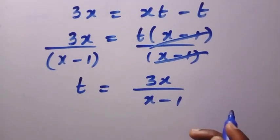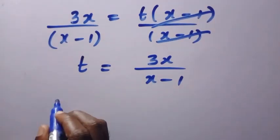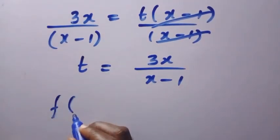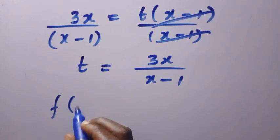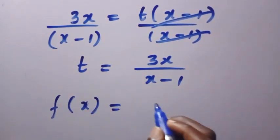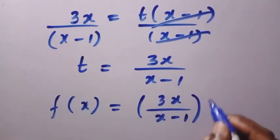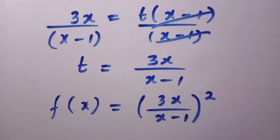Then let's try and substitute back into the original function, where we are going to have f of, instead of t over t minus 3, we change it to f of x equals